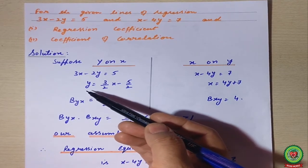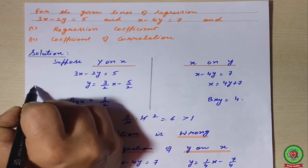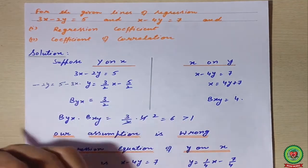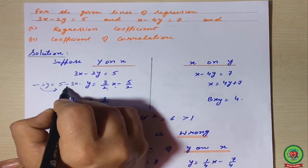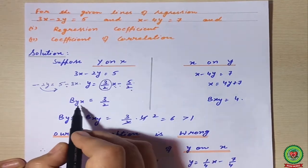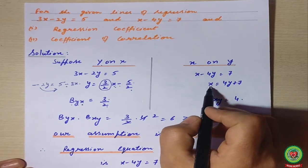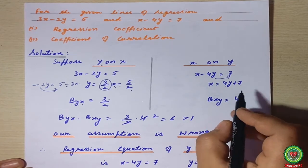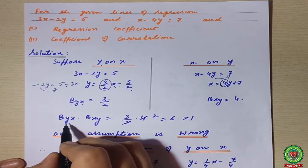According to step two, we find the value of y from the first equation: −2y = 5 − 3x, so y = (3/2)x − 5/2. The coefficient of x is 3/2, which is byx. For x on y from the second equation, we take x to one side: x = 4y + 7. The coefficient of y is 4, which is bxy.